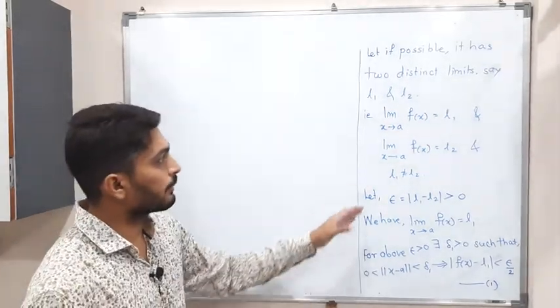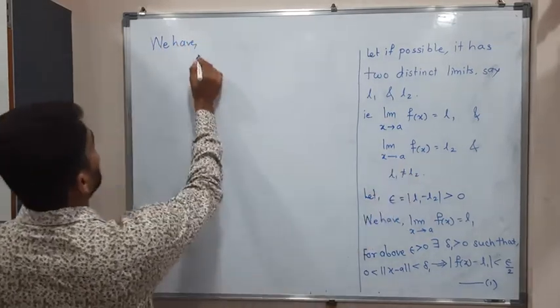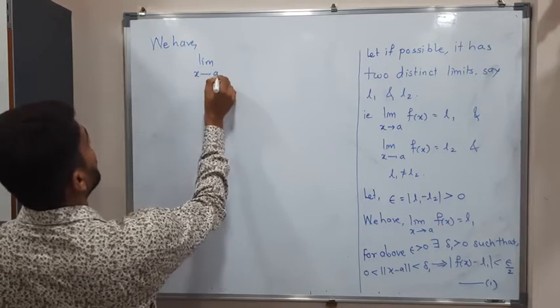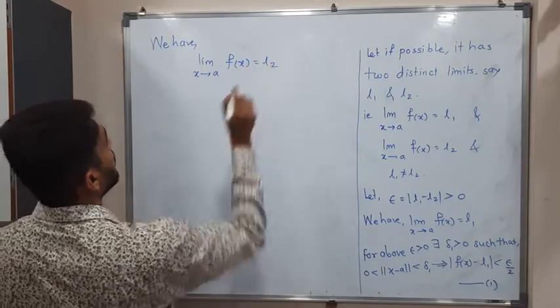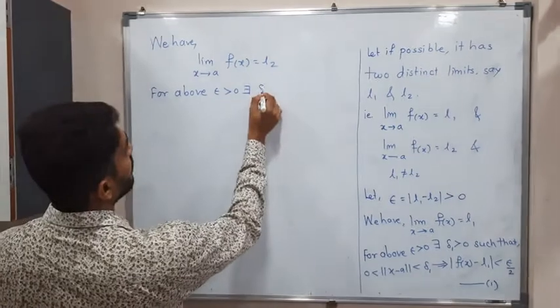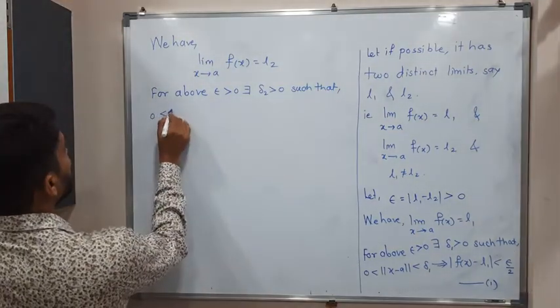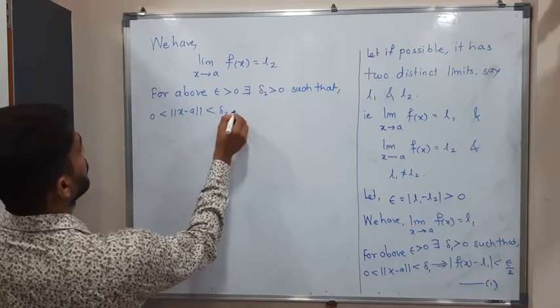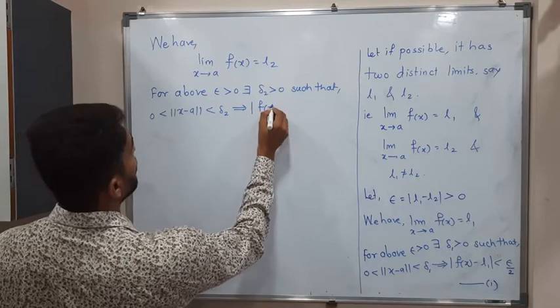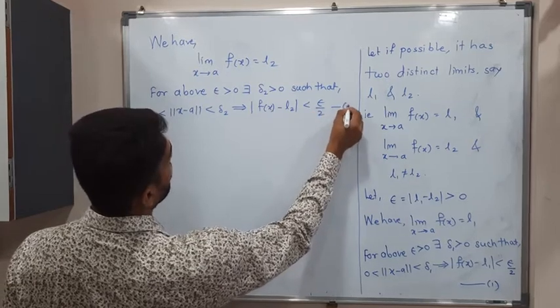Now using the second information: limit as x tends to a of f(x) = L2. Applying the same definition: for the above epsilon greater than zero, there exists δ₂ > 0 such that 0 < ‖x − a‖ < δ₂ implies |f(x) − L2| < ε/2. This is equation number two.